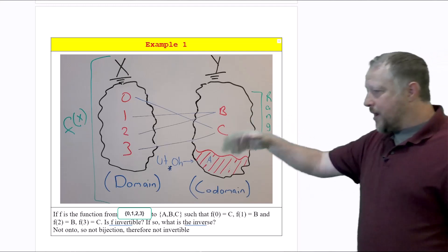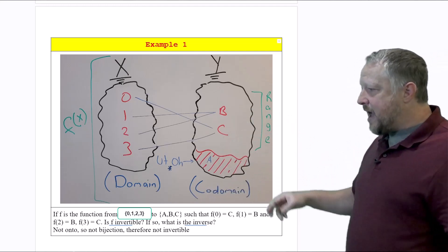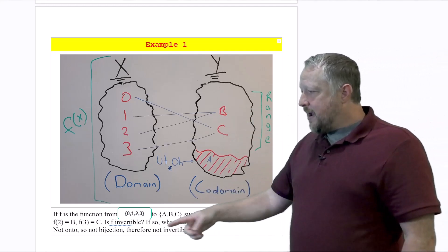Number two is the overall layout. There's the mapping that we have, f of one to b and three. Is f invertible?